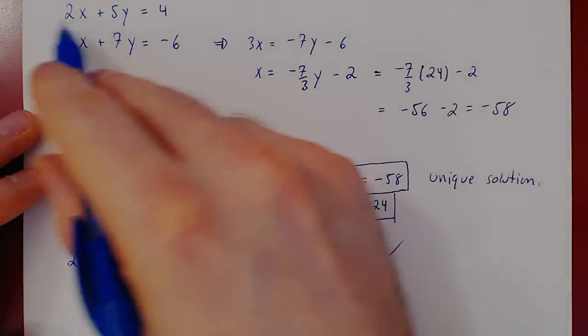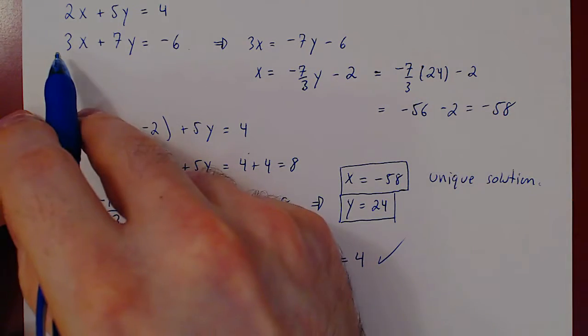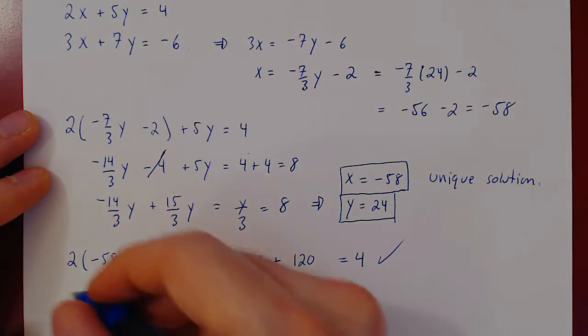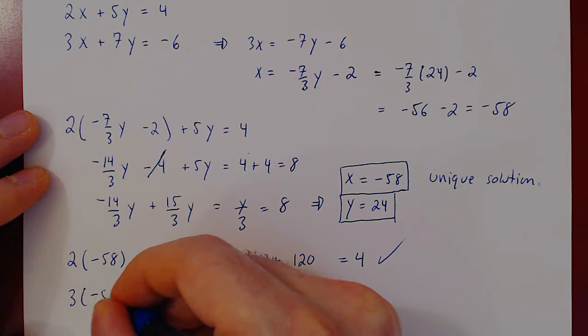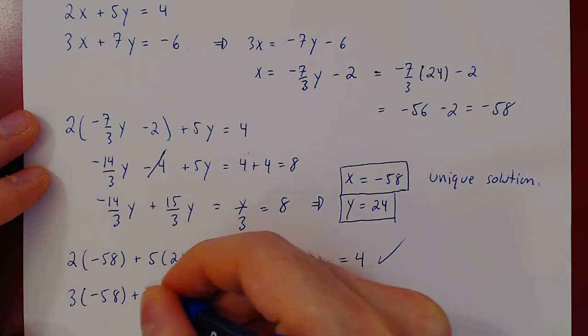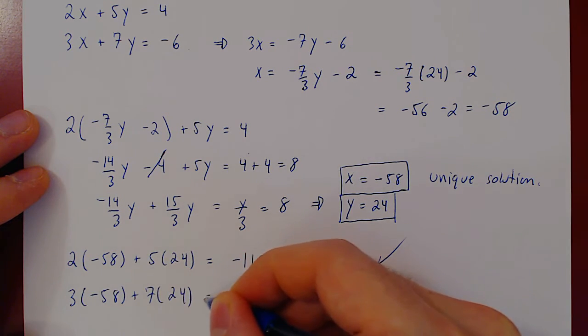The solution satisfies the first equation. Let's look at the second equation now. 3 times x, 3 times negative 58, plus 7 times y, which is 24, equals.